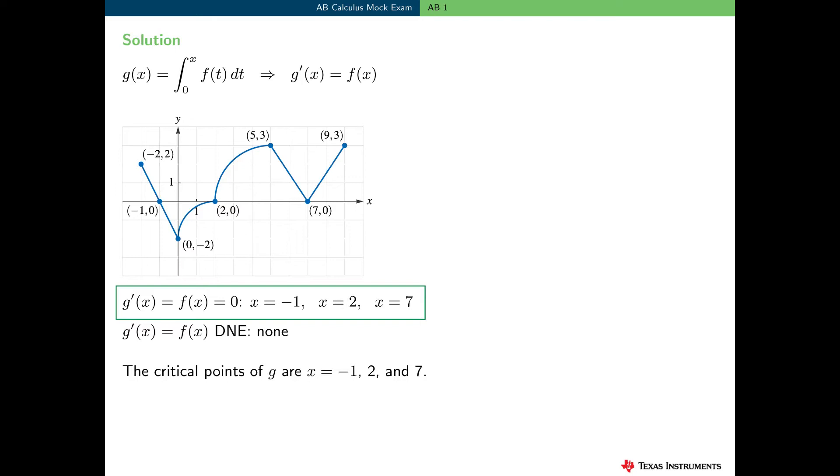So, looking at the graph, f of x is equal to 0 when x is equal to minus 1, 2, and 7. There are no places where f of x does not exist. f is defined for all x in the interval minus 2 to 9. Now, there are some places where f prime does not exist, but these x coordinates are not relevant to this part of the problem. So finally, the critical points of g are x equal minus 1, 2, and 7.